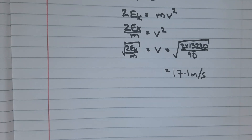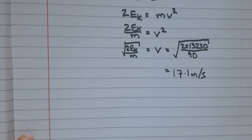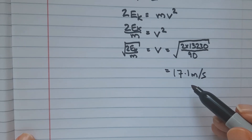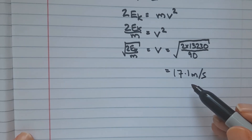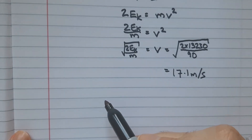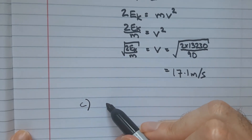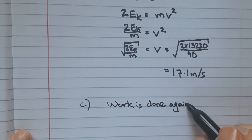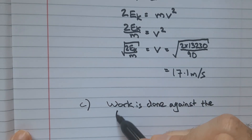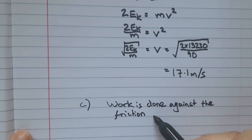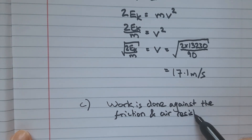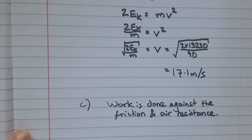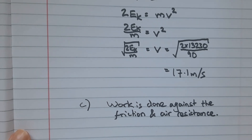Finally, for part C, we are asked to explain why the speed of the miner isn't actually 17.1 metres per second at the bottom of the slide. This is a really common follow-up question when dealing with the change from gravitational potential energy to kinetic energy, and the answer should contain three parts. Firstly, you should use the language that work is done against the resistive forces — in this case, friction and air resistance. Work means energy transferred, so by saying work is done against friction and air resistance, we mean energy is being transferred as the object travels through those resistive forces.